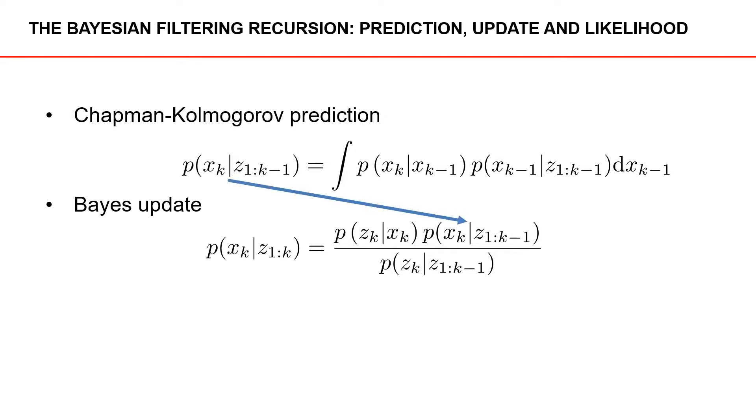So we can see that the predicted density is used in the Bayes update, and the updated density is then used in the next prediction. And this gives us the Bayesian filtering recursion. We predict the posterior density, we do a Bayes update, and then we repeat this.